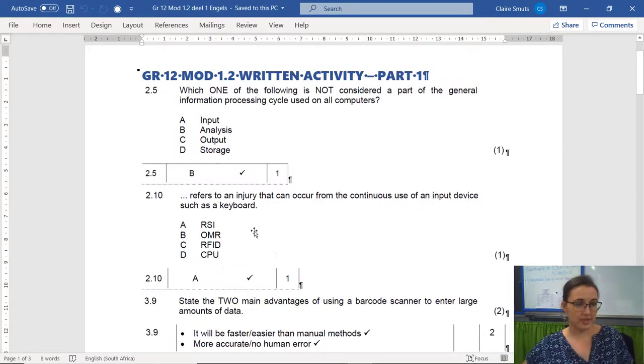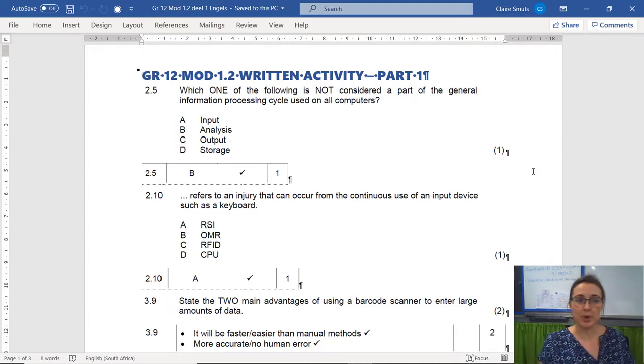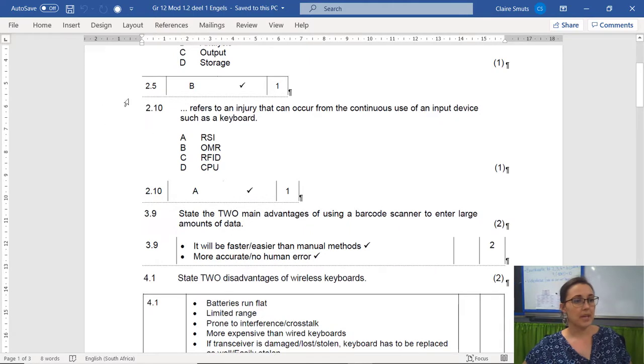So 2.5 and 2.10 are straightforward answers. By the way, these questions all come from past papers, past theory papers from CAT. 2.5, which one is not considered part of the general information processing cycle on all computers? That's obvious, it's B. Usually it's input, processing, output and storage. It's not analysis, it's processing. And 2.10, the answer was A, RSI refers to an injury that can occur from the continuous use of an input device such as a keyboard. By the way, OMR stands for optical mark recognition and that was removed from the curriculum, so you don't need to know that anymore.